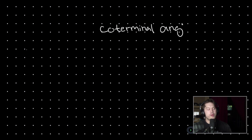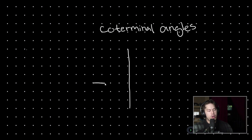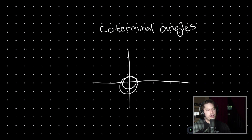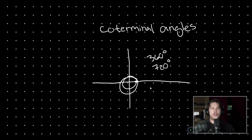If we're talking about coterminal angles, we need a definition — we need to know what it means for angles to be coterminal. Angles are coterminal whenever the two angles in question end in the same location. Think of gymnastics, skateboarding, or just doing a spin: whether you go around one time or two times, your end location is the same. Spinning 360 degrees or 720 degrees — two full revolutions — you'll have the same terminal point. Therefore, those angle measures are coterminal.